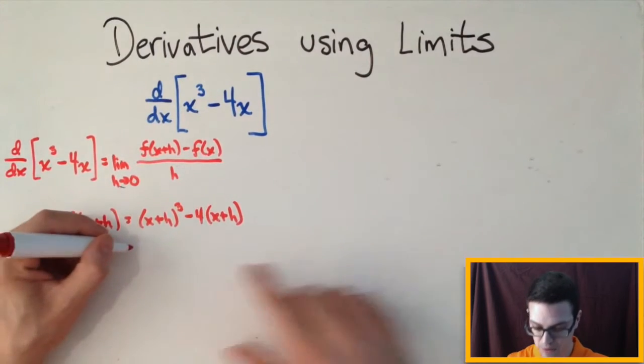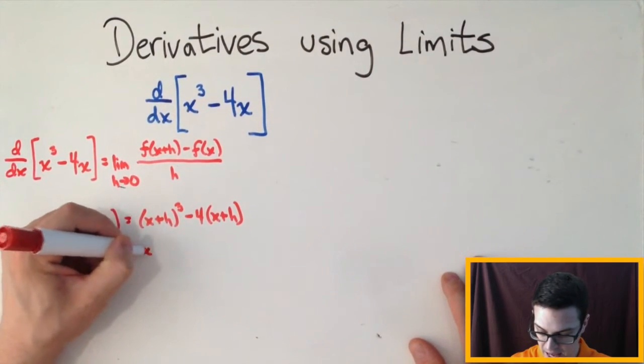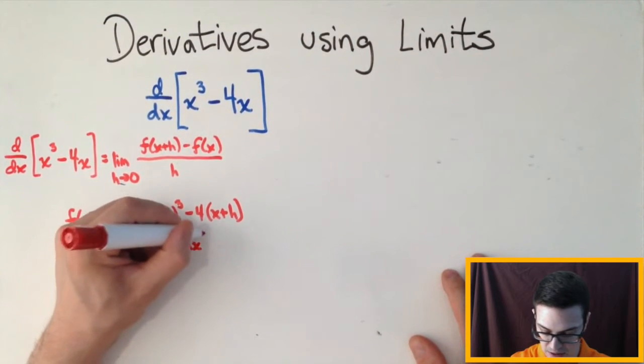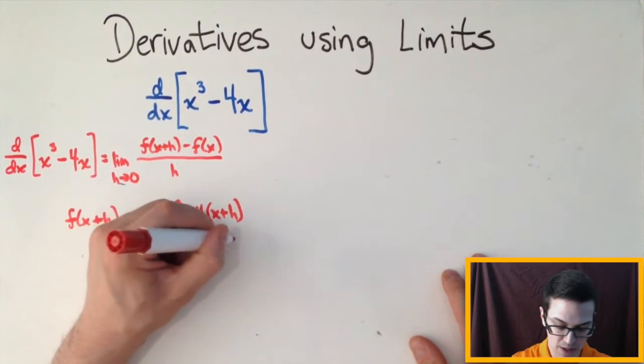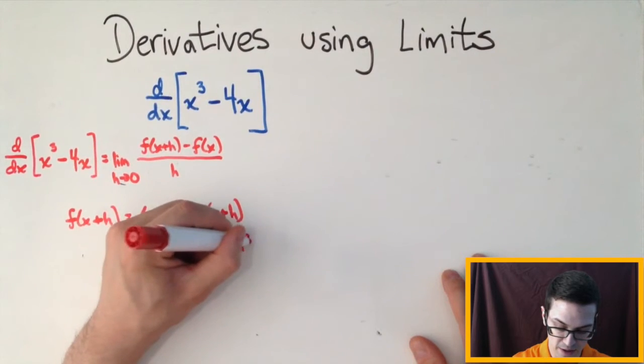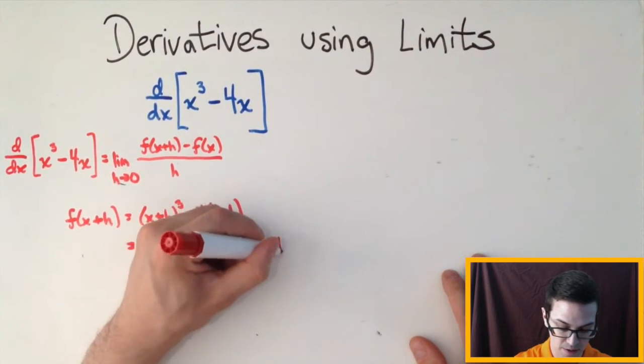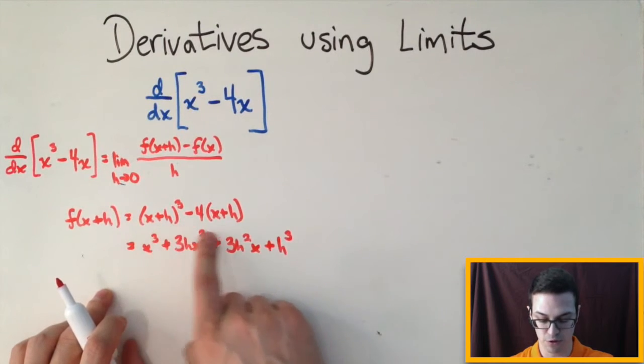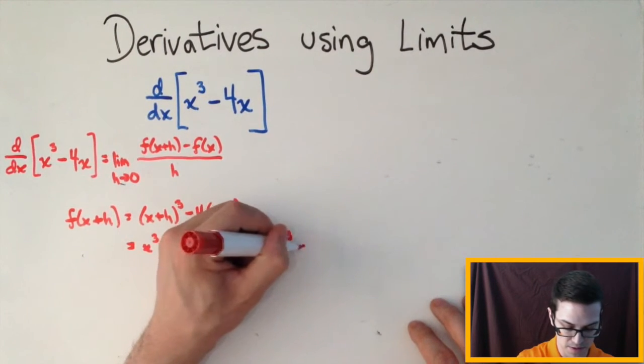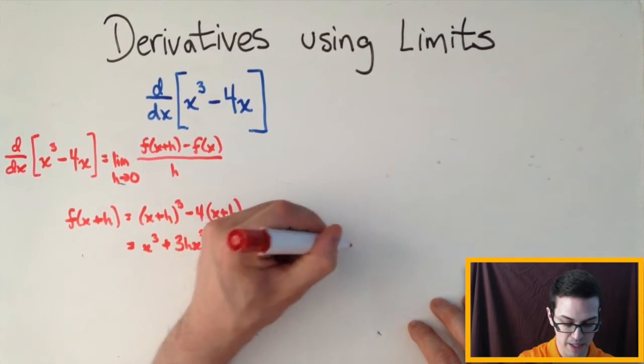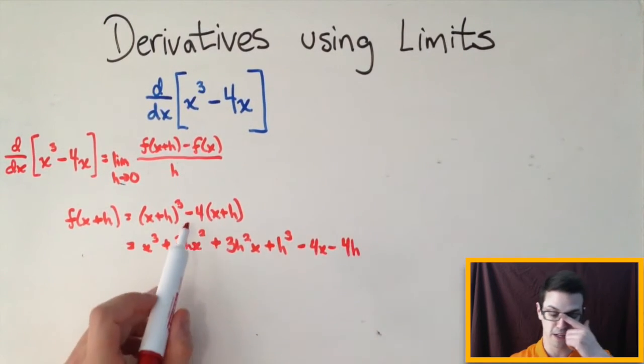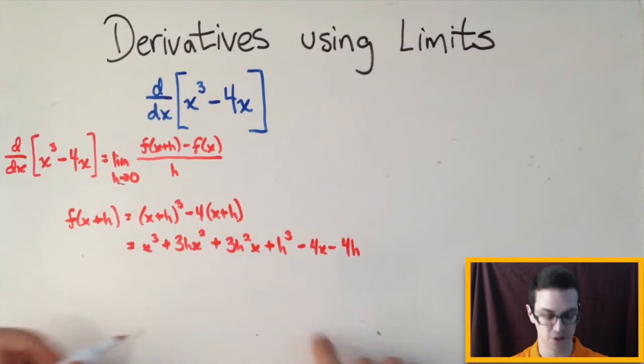Okay, this would expand out to be x cubed plus 3hx squared plus 3h squared x plus h cubed. So that would be this first term right here if that's cubed minus 4x minus 4h because I just distributed this 4 into the x and the negative 4 into the x and the negative 4 into the h to get this.